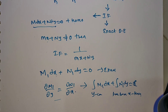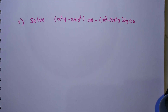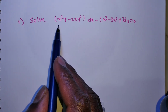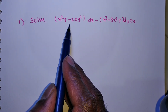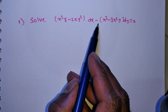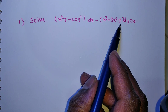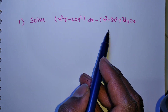How do we identify a non-exact differential equation? We apply Rule 2, Rule 3, Rule 4, or Rule 5 to find the integrating factor. Problem 1: Solve (x²y − 2xy²) dx + (−x³ + 3x²y) dy = 0.